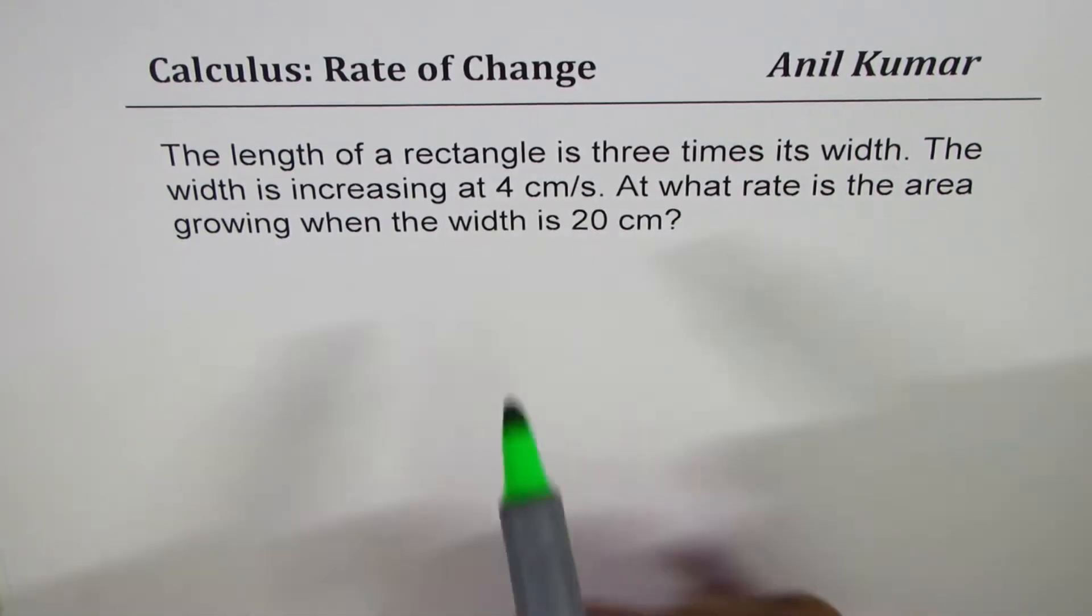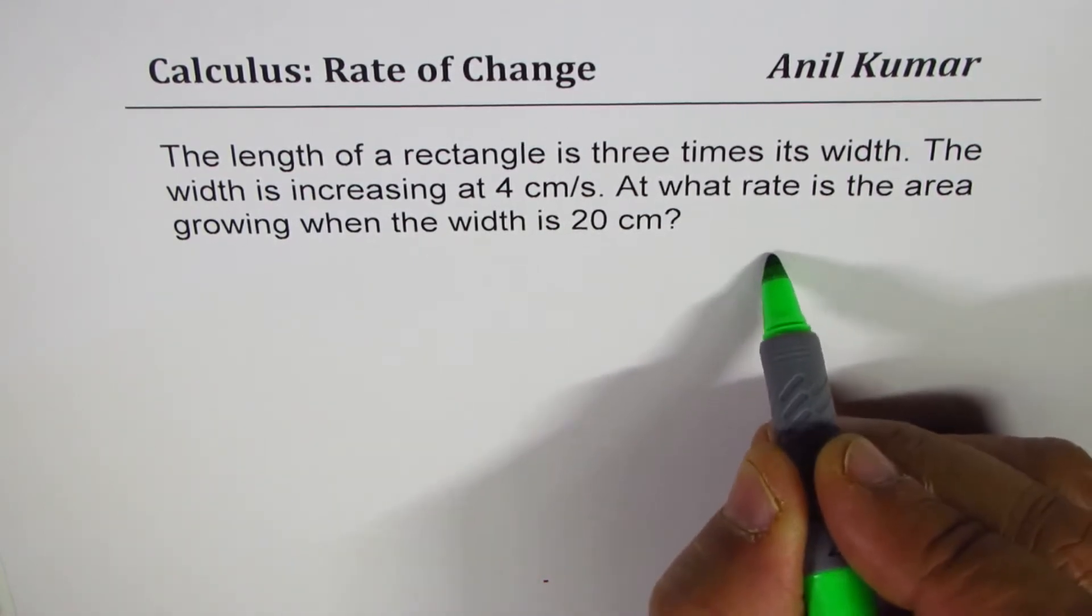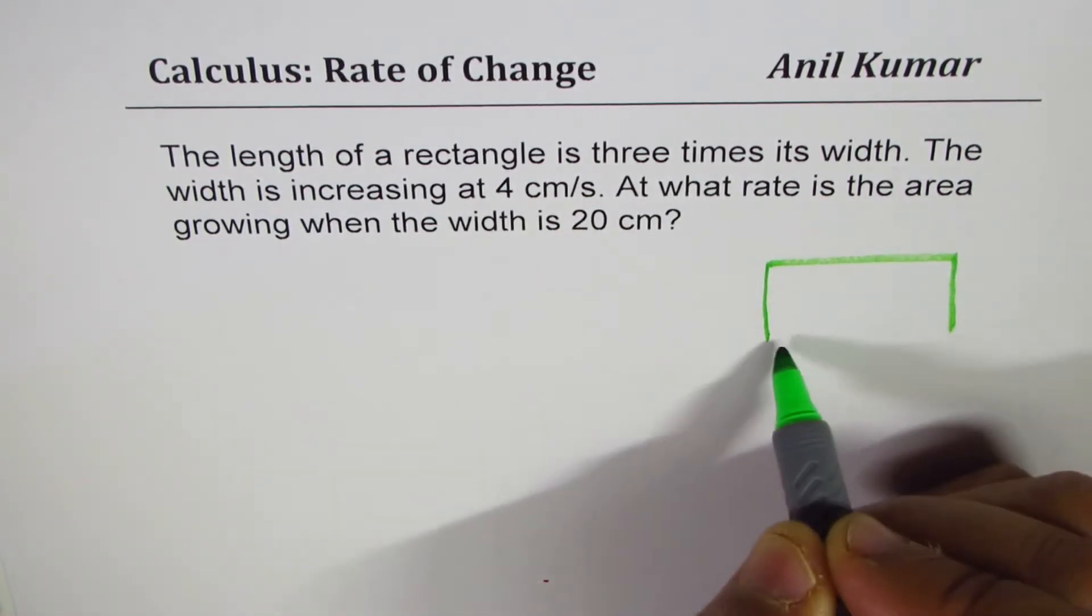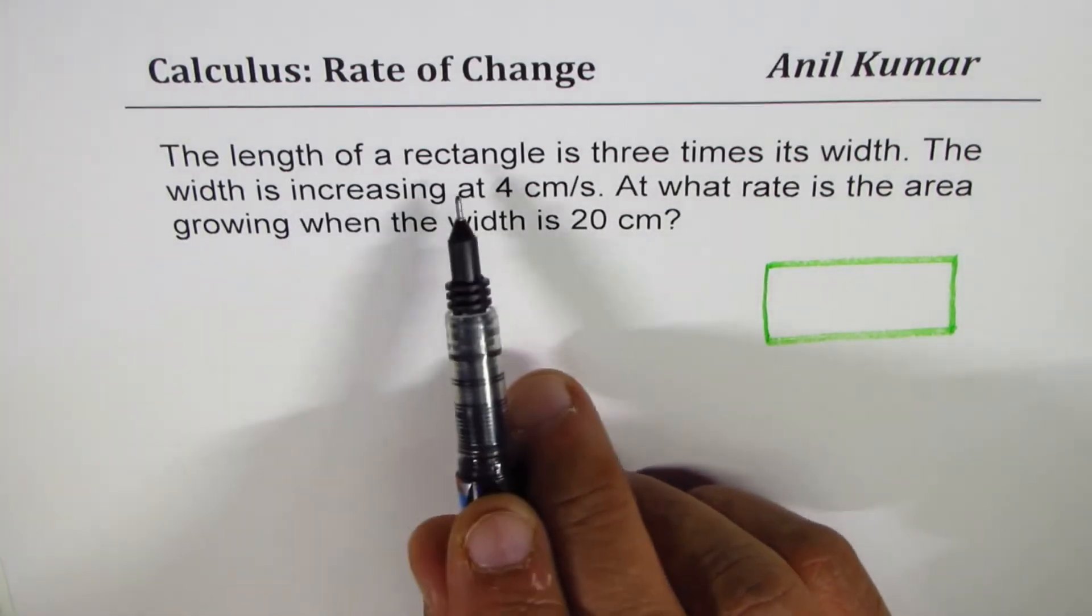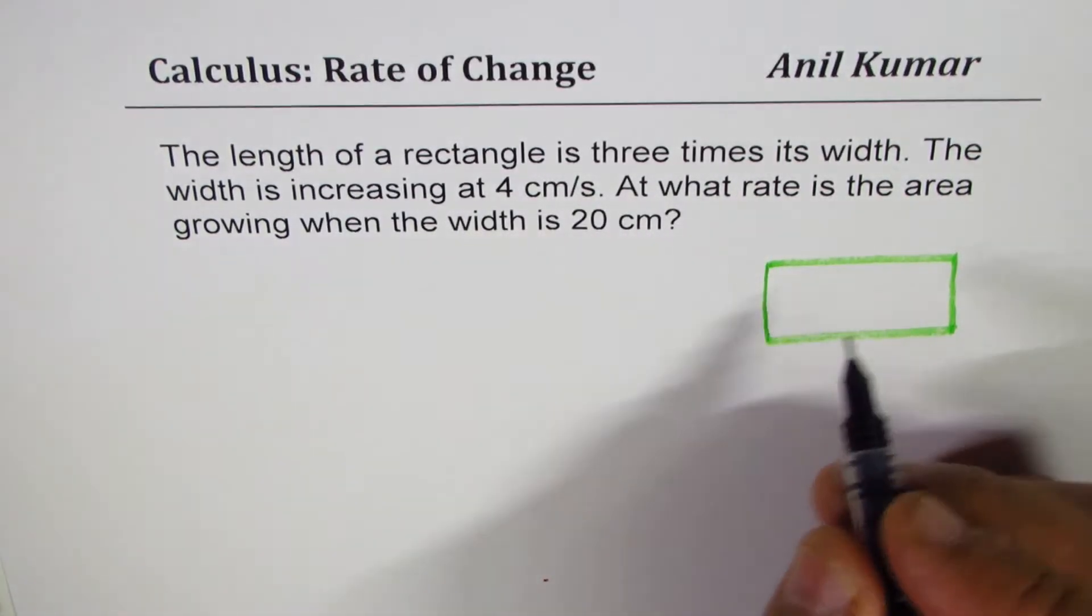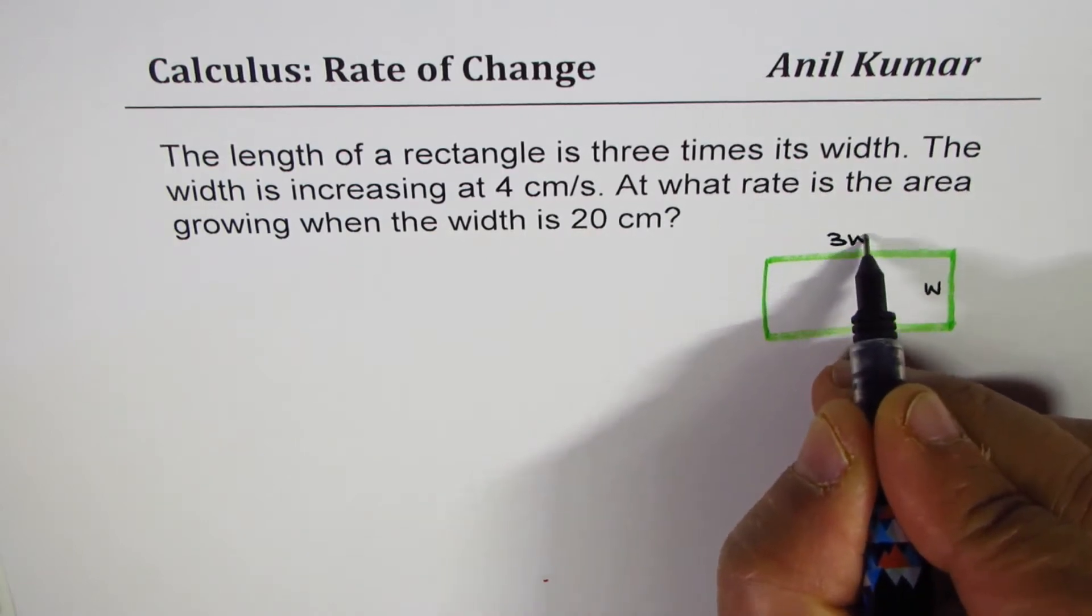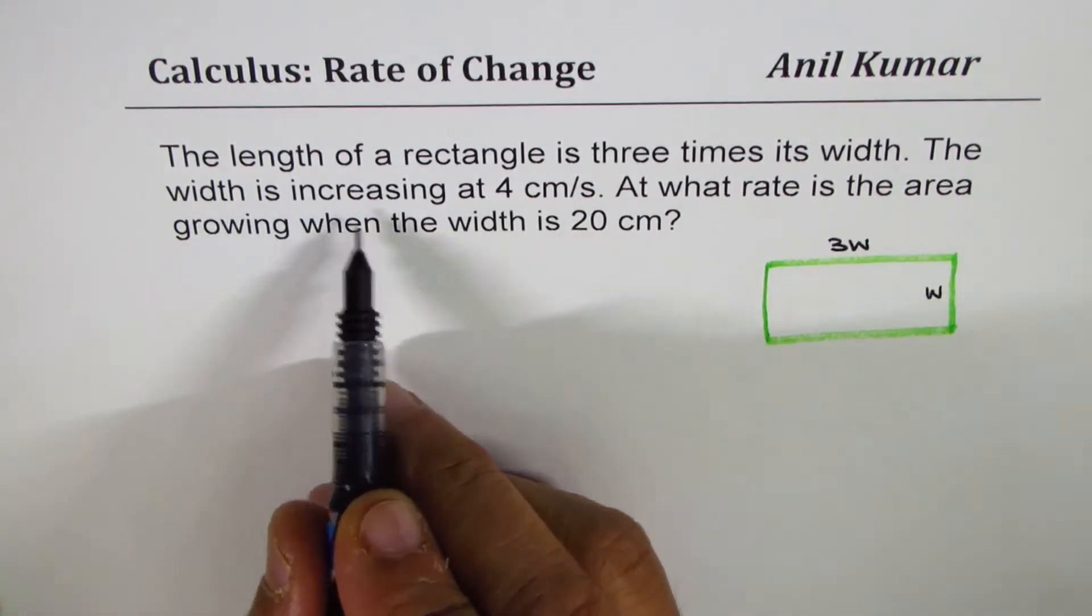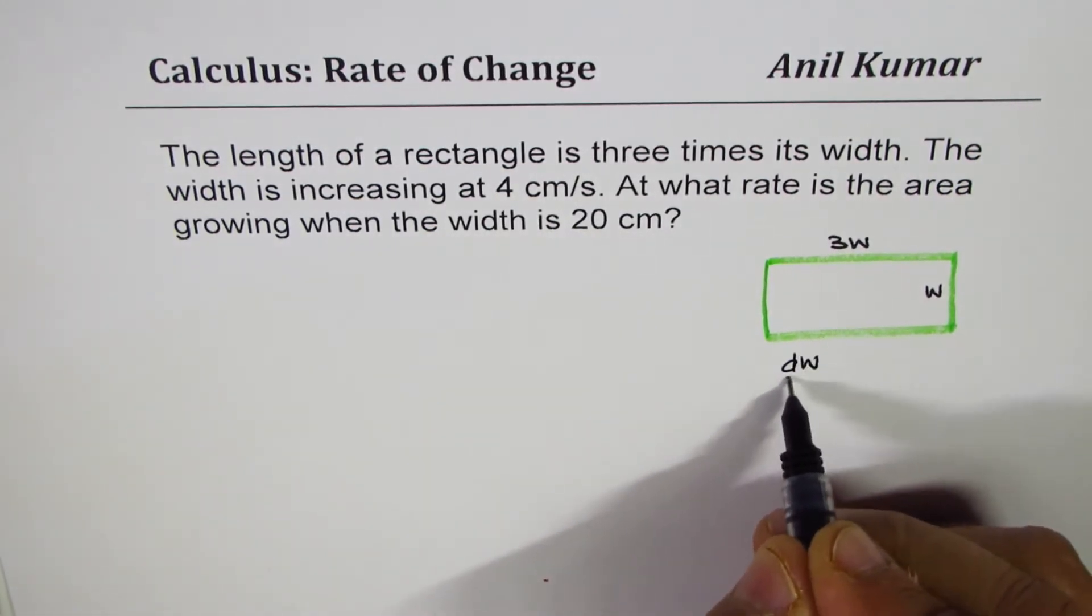So always begin with a sketch - it could be a rough sketch but it helps. Here's our rectangle. The length of the rectangle is three times the width, so my width is W and the length will be 3W.